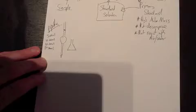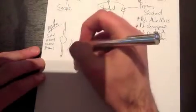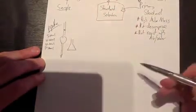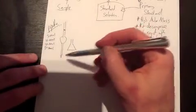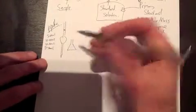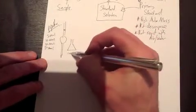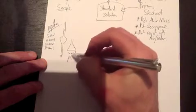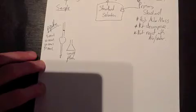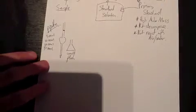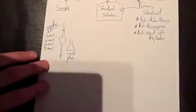A conical flask is what we use for titrations, mainly because they swirl really nicely. We don't use beakers for titrations - we use conical flasks.